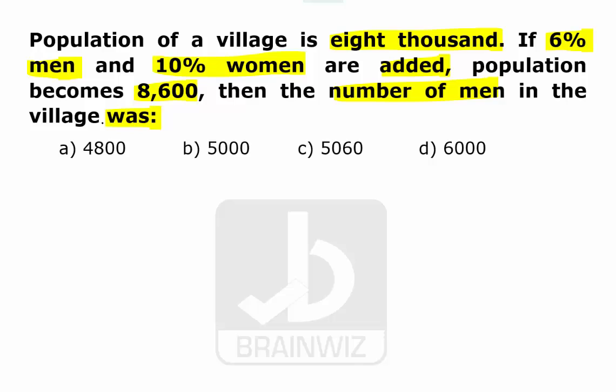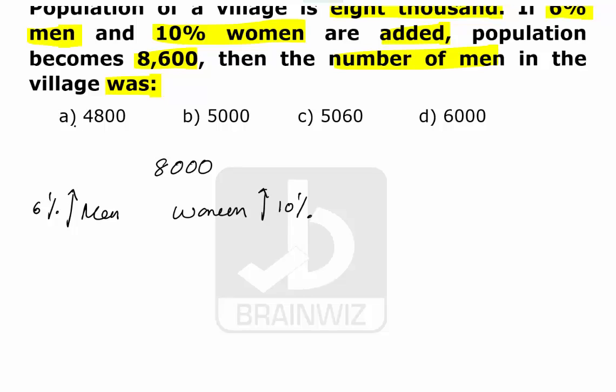So as we have two variables, men and women, we can go with the options. Let's try to have here that 8000 is the population. In that 8000 there were men and there were women. 6% of the men are hiked and 10% of the women are hiked.